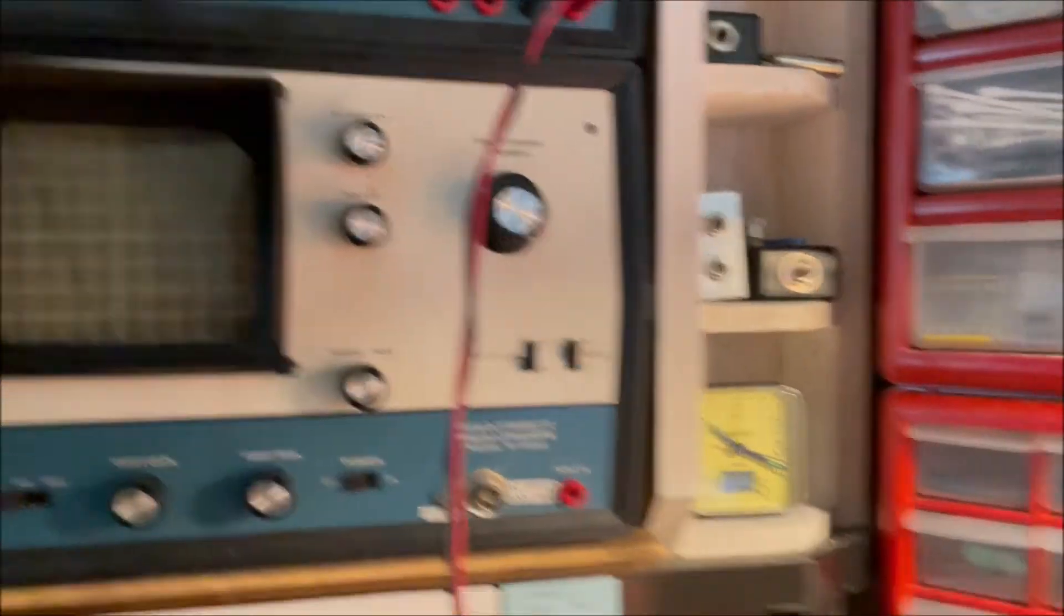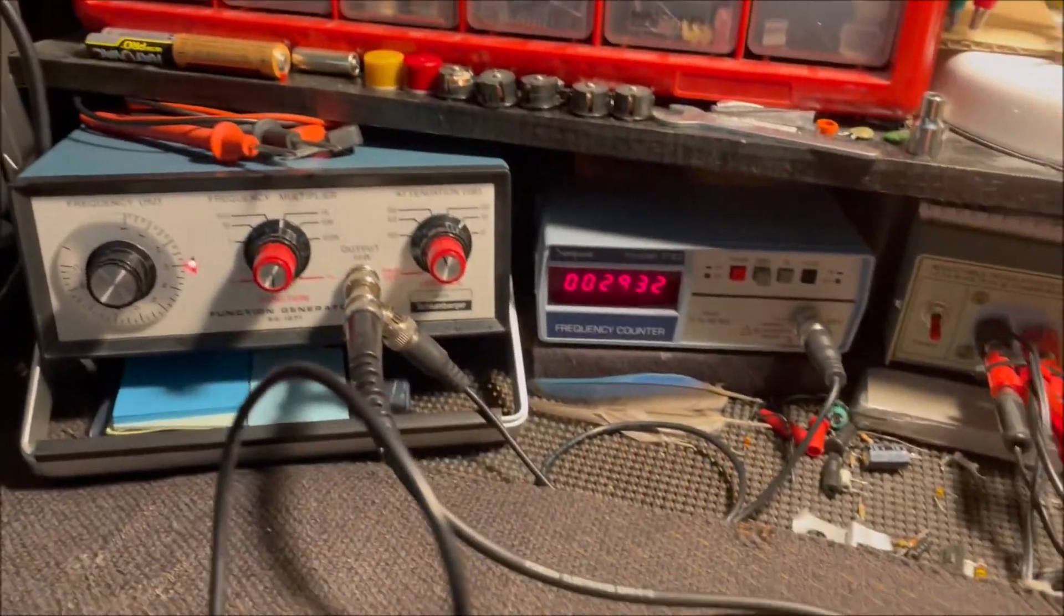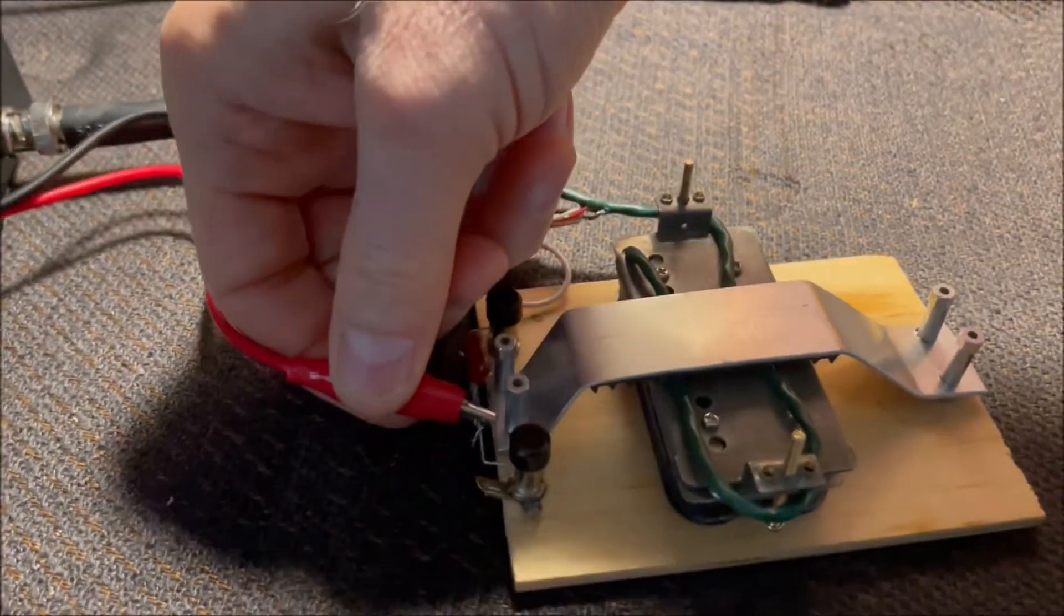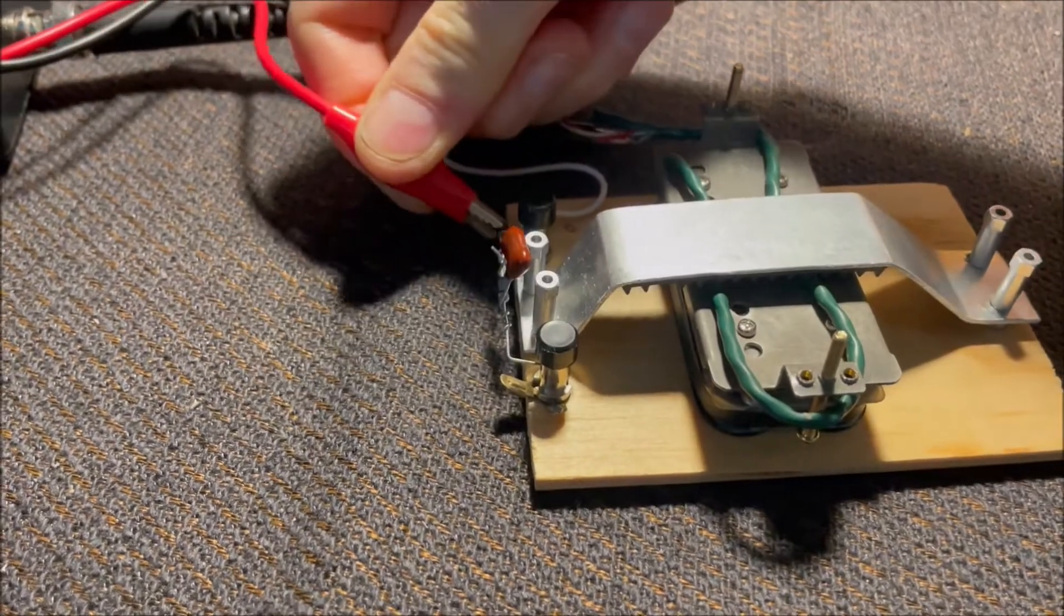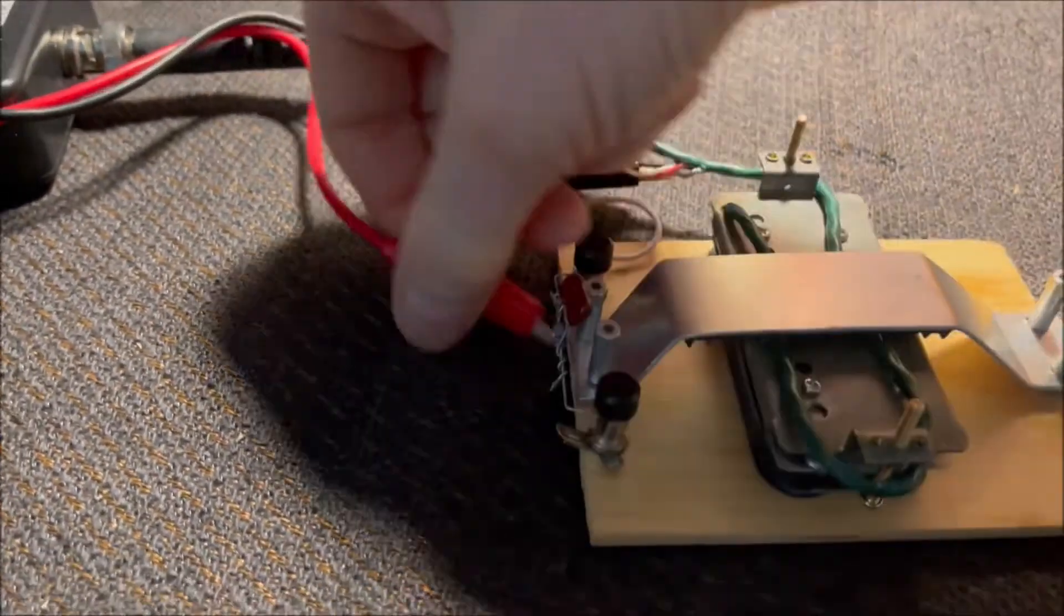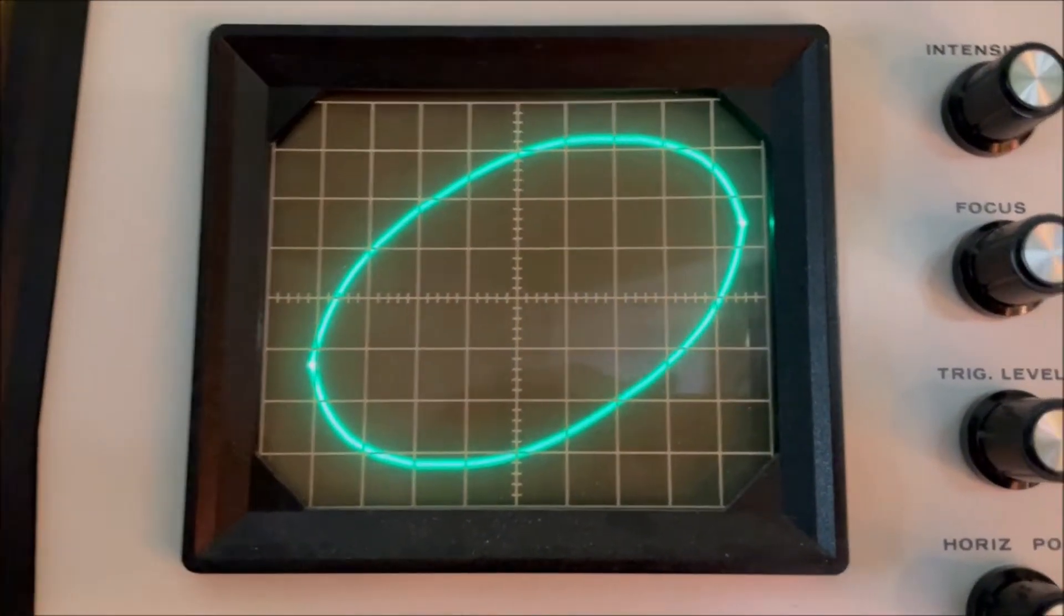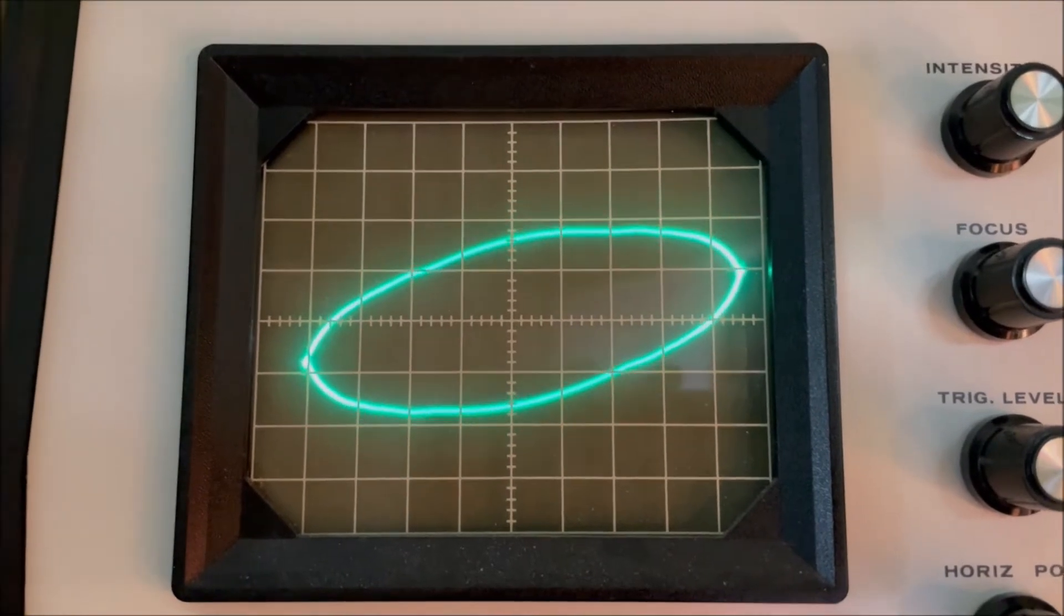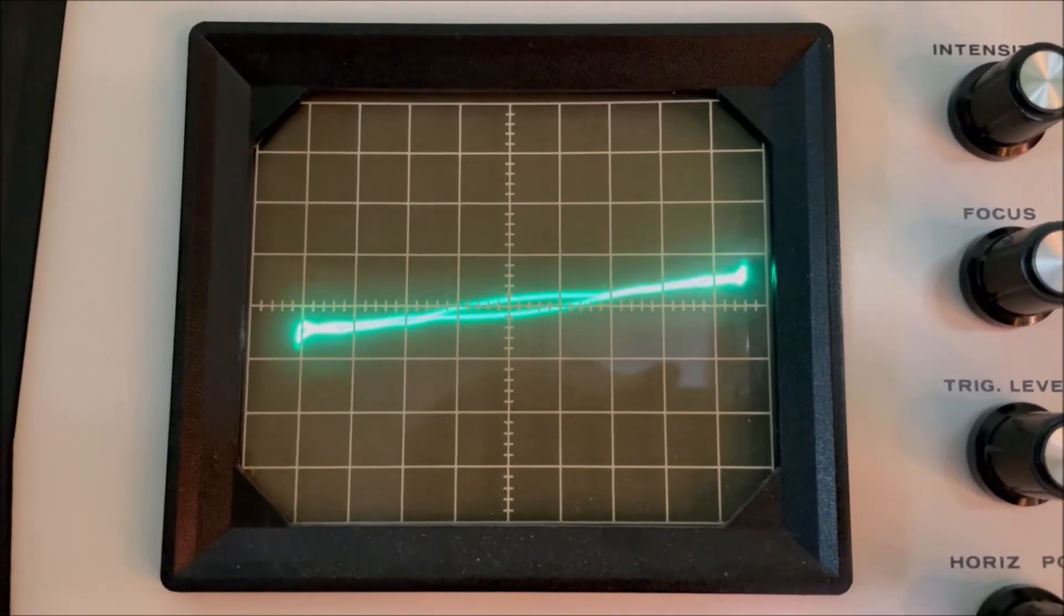Now just to show you what the difference is not having a dummy load, we'll take this dummy load out of the circuit. And now go up here, you'll see the ellipse got a lot larger, and we have to go all the way to about...